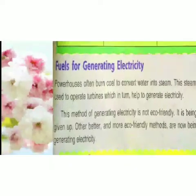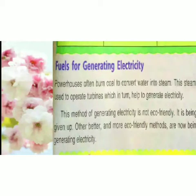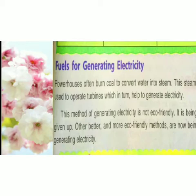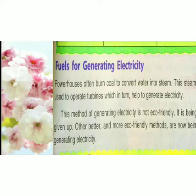Today we are going to discuss about fuel for generating electricity. Powerhouses often burn coal to convert water into steam. This steam energy is used to operate turbines, which in turn help to generate electricity. However, this method of generating electricity is not eco-friendly.